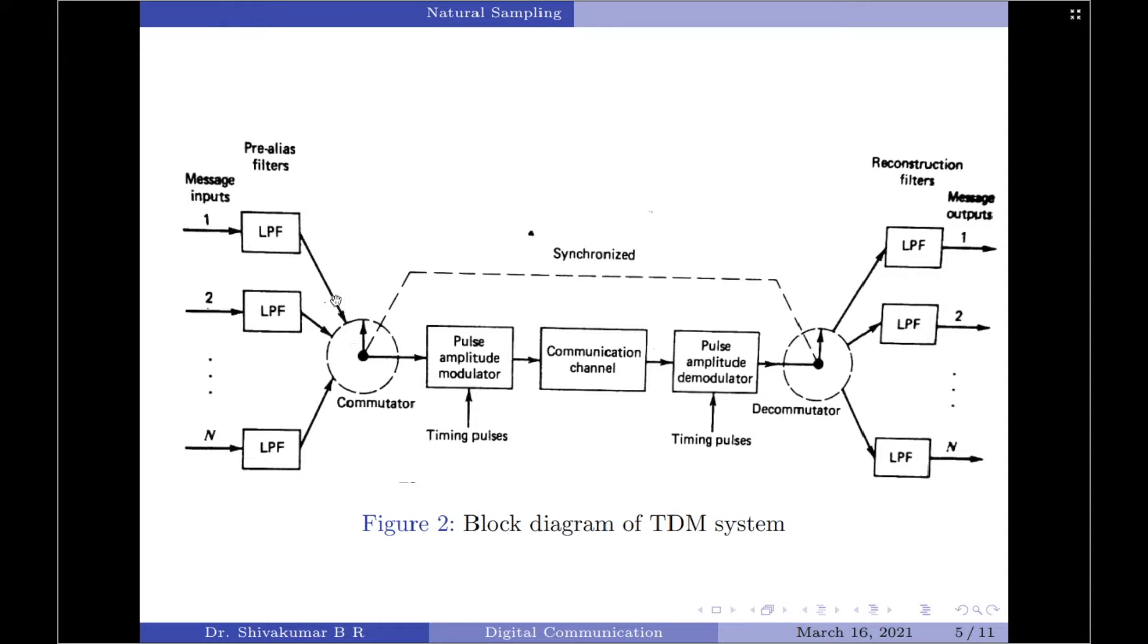The commutator performs two important operations. At first, it takes a narrow sample of each of the N input messages at a rate of fs that is slightly higher than 2w, where w can be assumed to be the cutoff frequency of the pre-alias filter. Secondly, it sequentially interleaves or accumulates these N samples inside one sampling interval. In fact, this second function of the commutator is the essence of time division multiplexing operation.